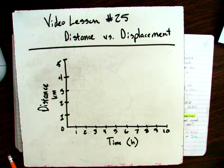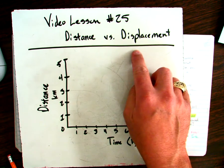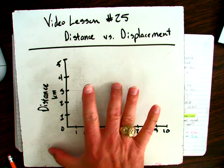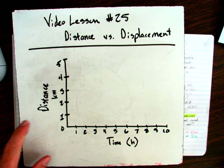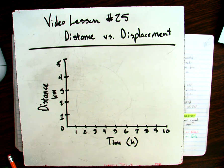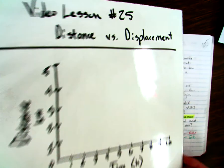All right, so this is going to be video lesson number 25. We're going to speak briefly about distance versus displacement. We're going to come back to this whiteboard here in just a second, but notice we do have another speed graph. So we have time on our x-axis and we have distance in kilometers over here on our y-axis. So we're going to come back to that in just a second.